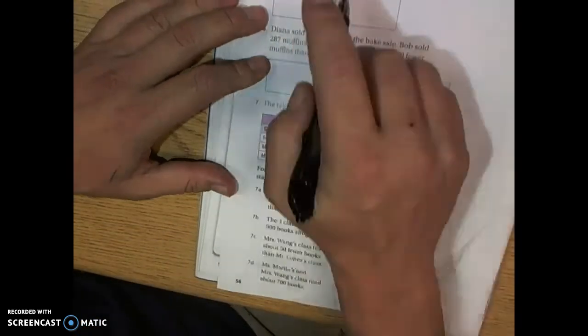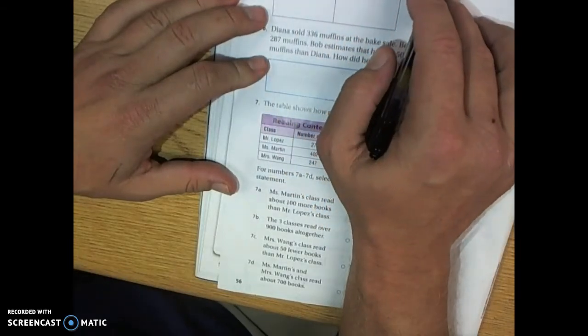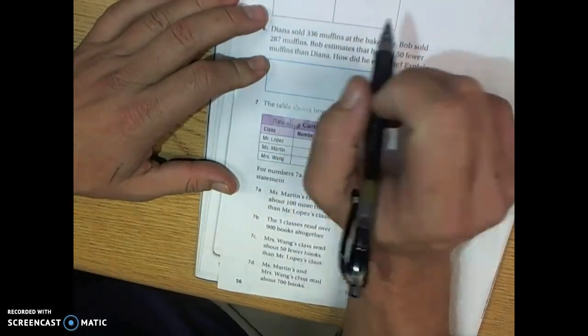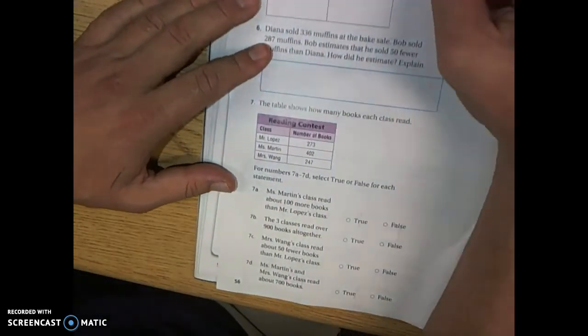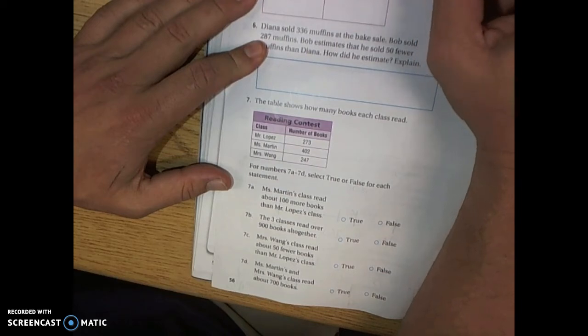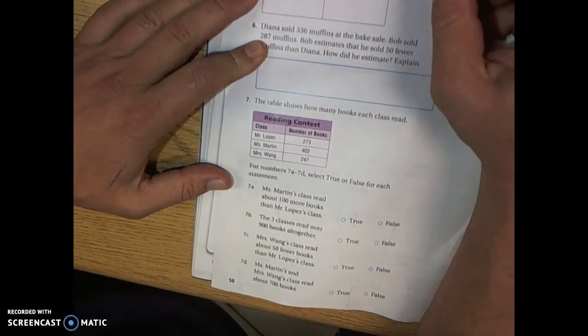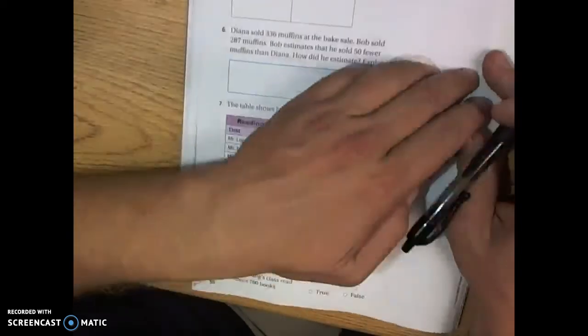Looking at number five. Write each number sentence in the box below the better estimate of the sum. All right. So here you're going to need to round these numbers up like we did in class.